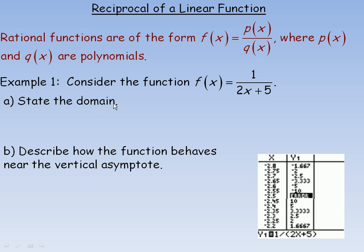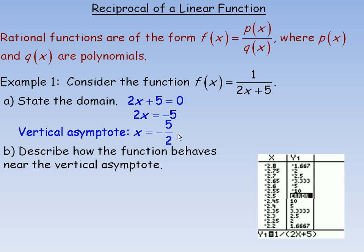For rational functions, there are often values that make the function undefined. You cannot have a value of x that makes the denominator equal to zero. So I would set 2x + 5 equal to zero to find any restrictions — values that cannot be substituted for x. Solving for x: subtracting 5 from both sides gives 2x = -5, and dividing by 2 gives x = -5/2.